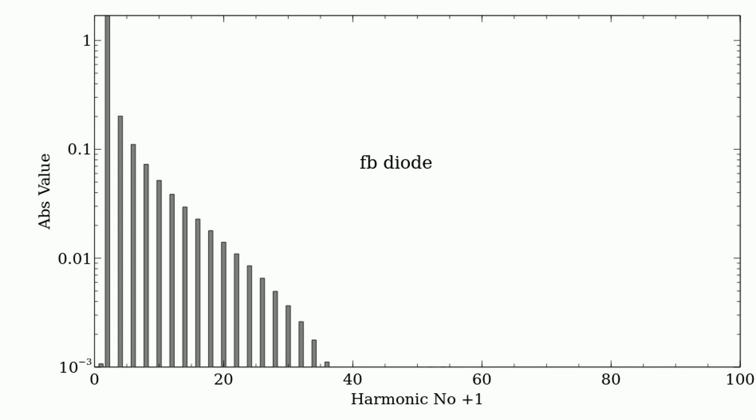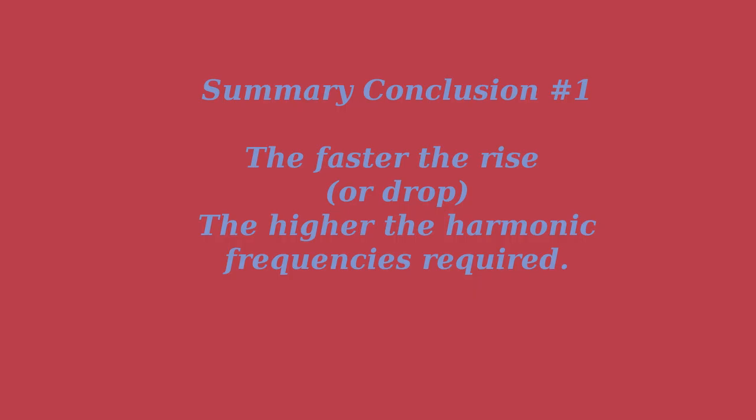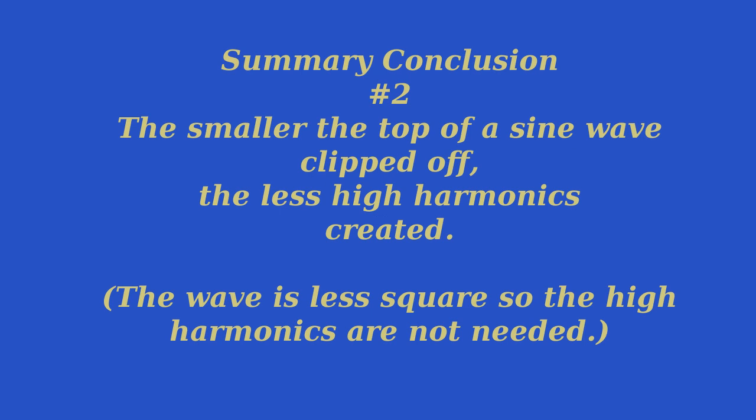I think we can summarize that the faster the waveform rises, the more square it is, I guess is another way of saying that, that the higher the harmonics are. And if you remember when we did the sawtooth, it also had a lot of high frequency harmonics because it has that one edge there that's very, very fast. So if we can slow it down, we have less harmonics. If we slow it down all the way so we end up with a sine wave, we have zero harmonics.